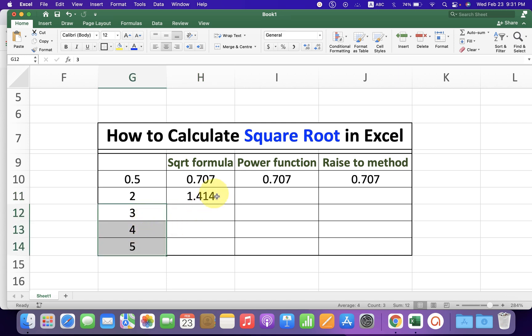Click on the cell and at the right-hand side at the bottom, you will see this plus symbol. Then hold the cell and drag the cell down, and you will get the square root for all the numbers.